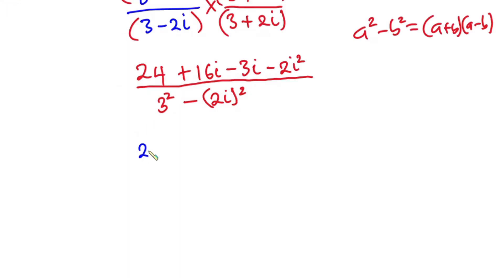Now let's simplify the top first. We have 24. Then 16i minus 3i is 13i. Then let's focus on this thing over here. We have 2i squared. From this we have i is equal to square root of negative 1. So i squared will be square root of negative 1 squared. So this square will cancel the square root. So we have i squared is equal to negative 1. So negative 1 times negative 2 is positive 2.